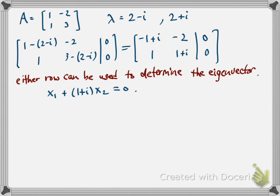So let me pick the bottom row to use to determine the eigenvector. I'll have that x₁ + (1+i)x₂ = 0. Which means if I pick x₁ to be 1+i and x₂ to be -1, that gives me a nontrivial solution to this equation. So that tells me I can pick, as an eigenvector, [1+i; -1].